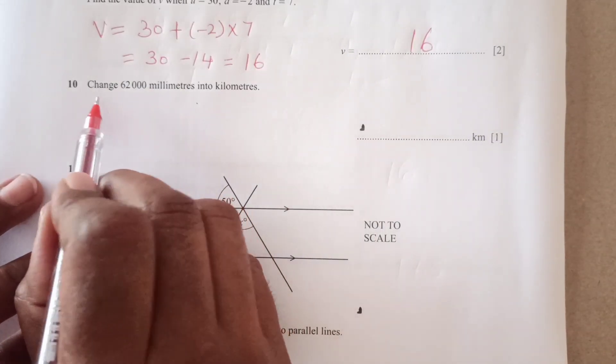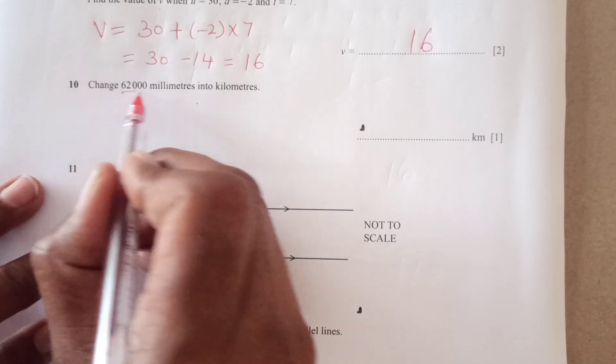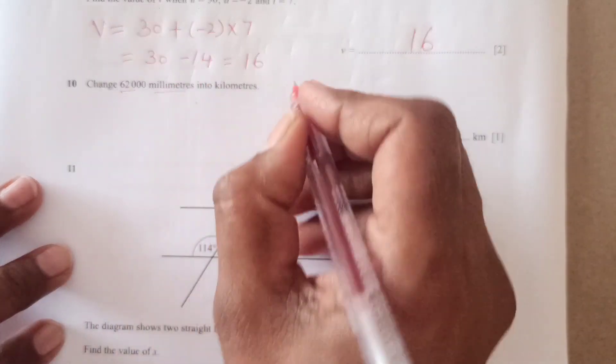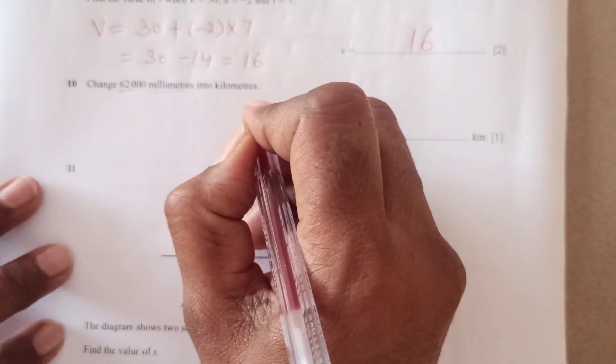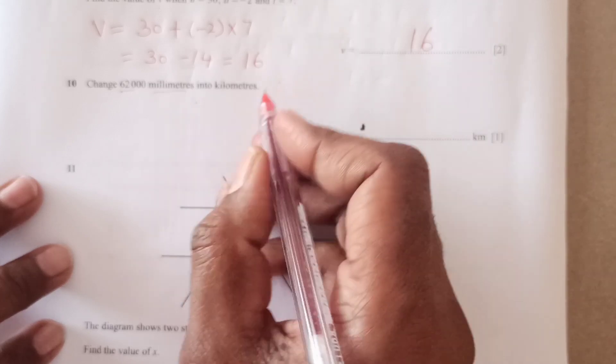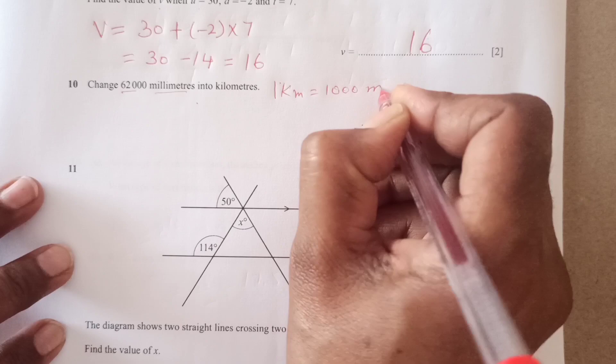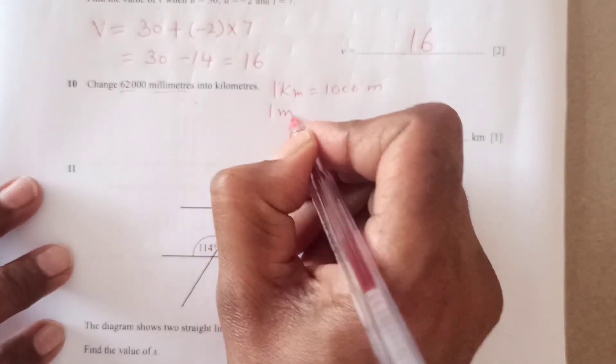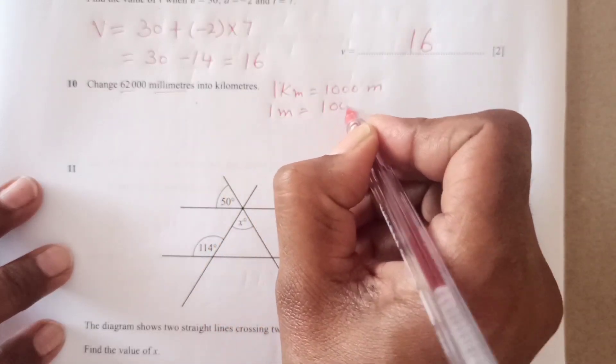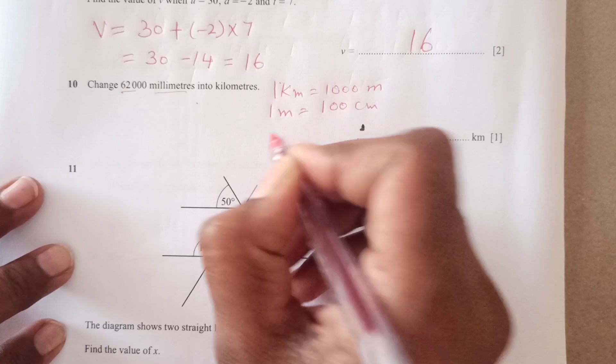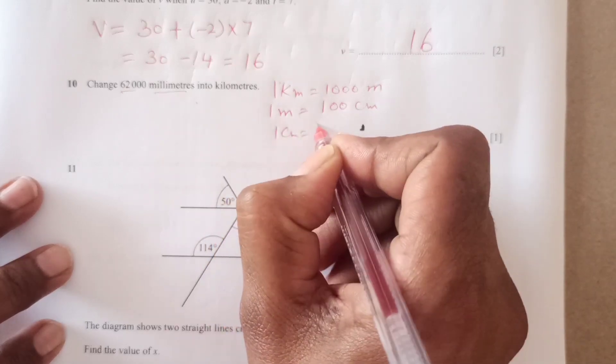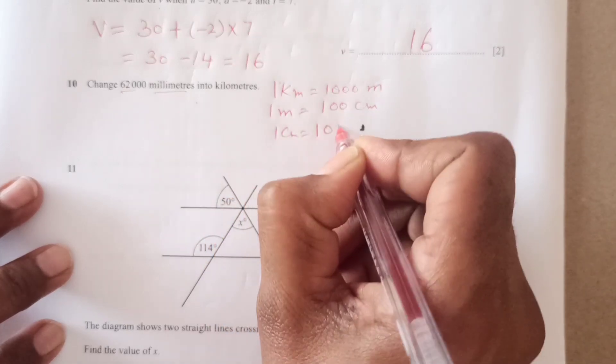Now 10th question, right? 62,000 millimeters, 2 kilometers. Now millimeter into kilometers. So we are going to divide here. So you know 1 kilometer is equal to 1000 meters, right?